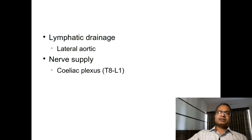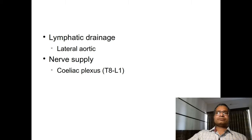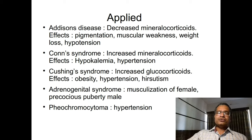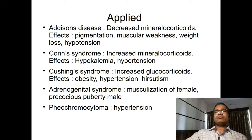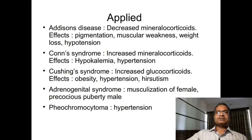The nerve supply mainly comes from the celiac plexus, via routes from T8 to L1 segments. This nerve supply mainly goes to the medulla of the suprarenal gland to control secretion from the medulla.